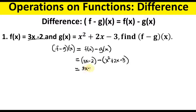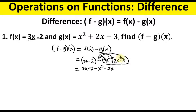Simplify by removing the parenthesis on the first expression: 3x minus 2. Then distribute the negative sign to each term of the second expression: negative times x squared gives negative x squared, negative times positive 2x gives negative 2x.